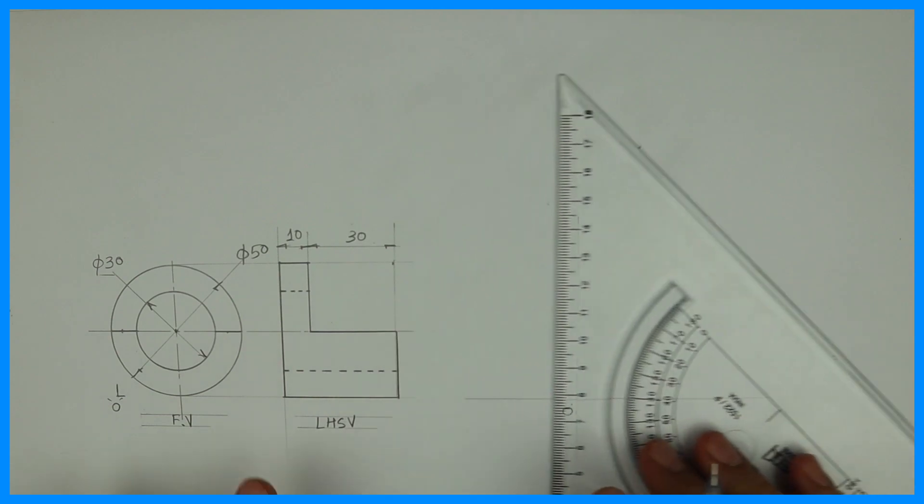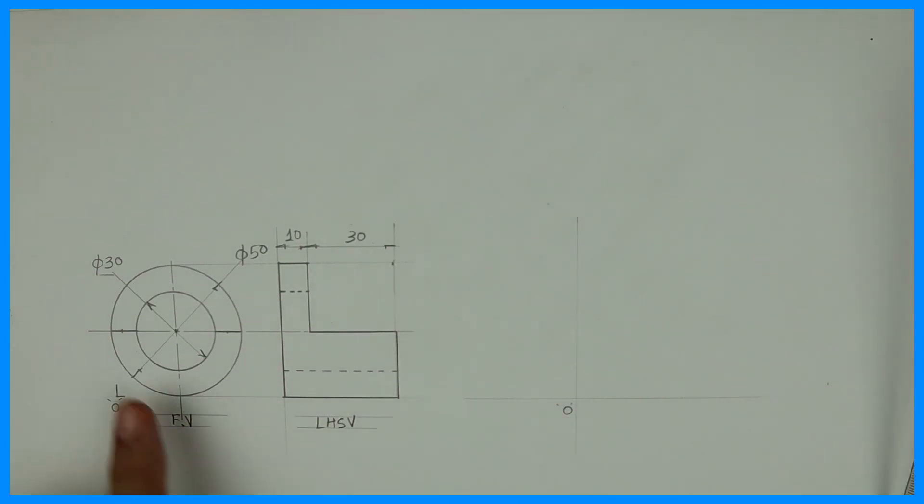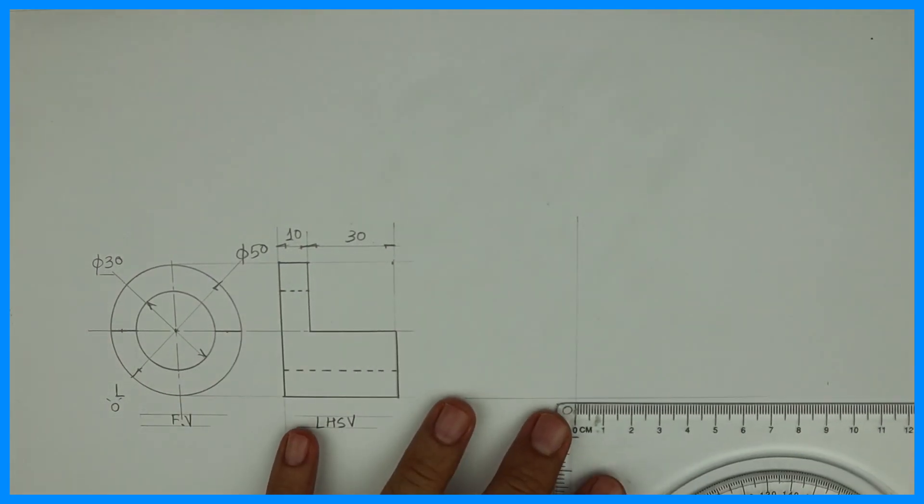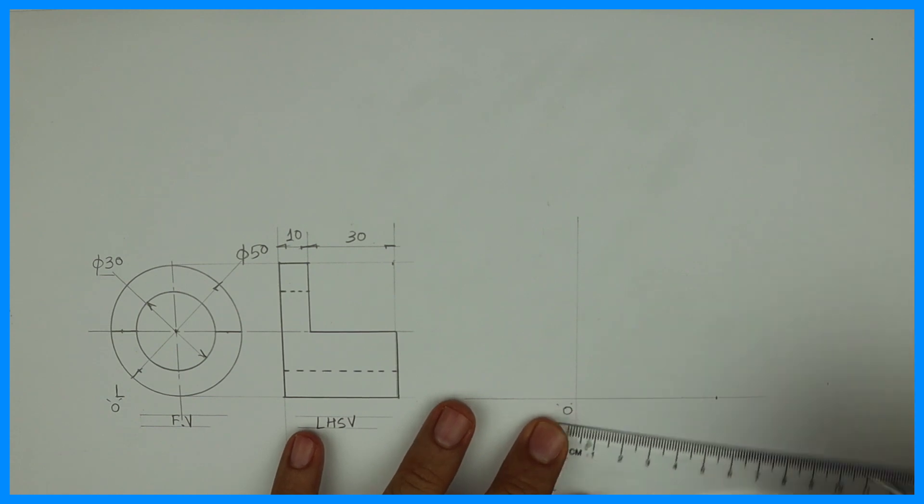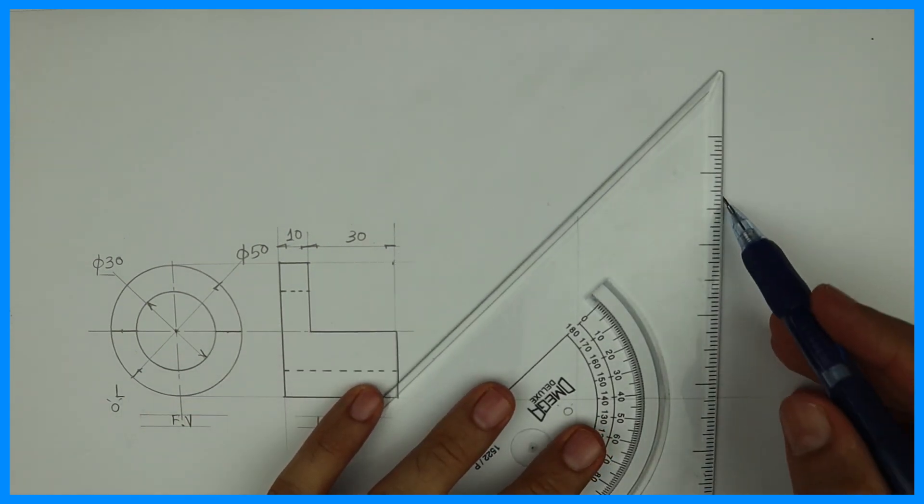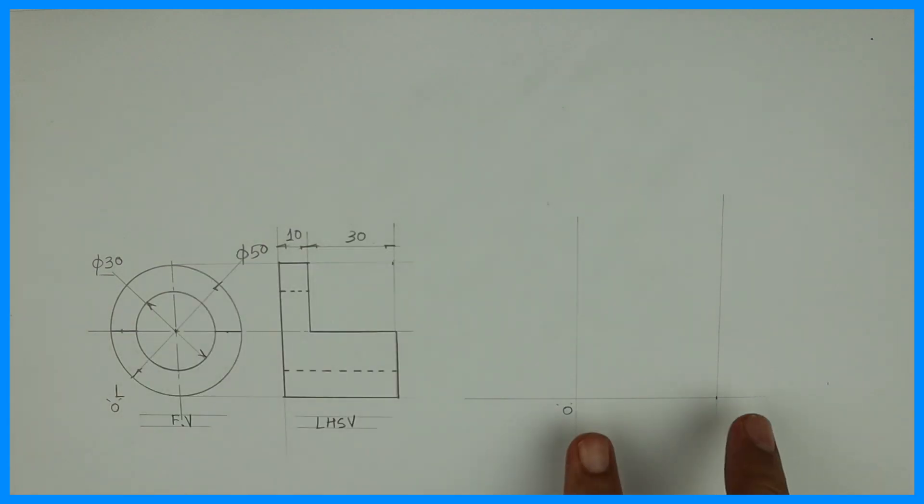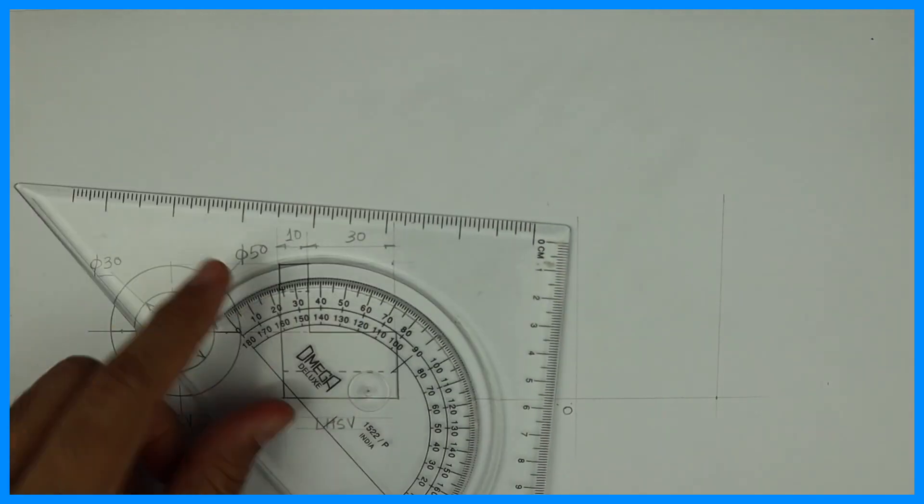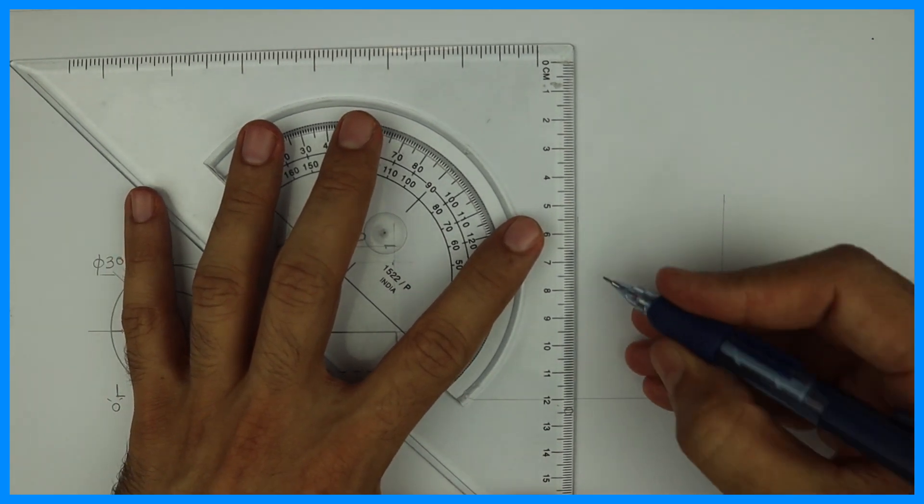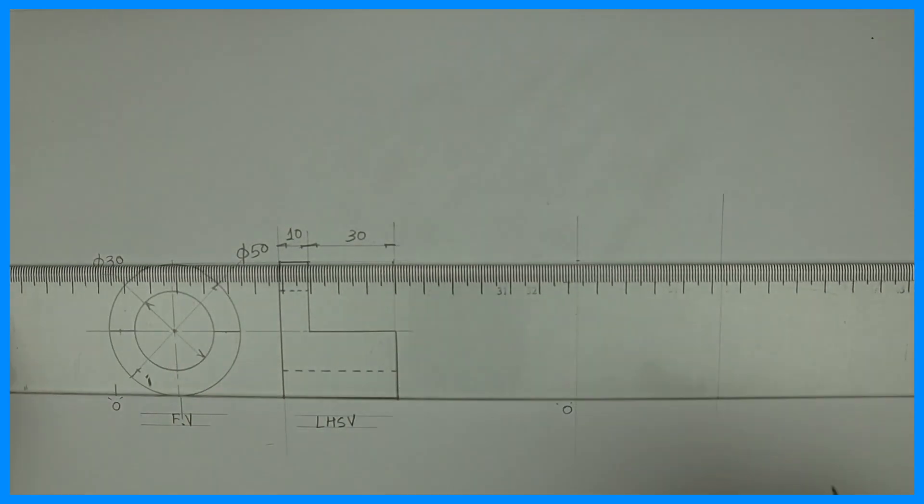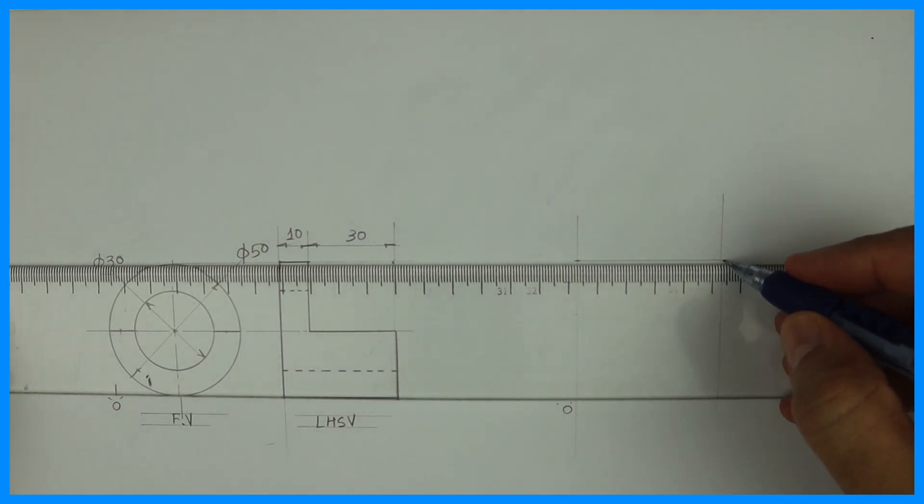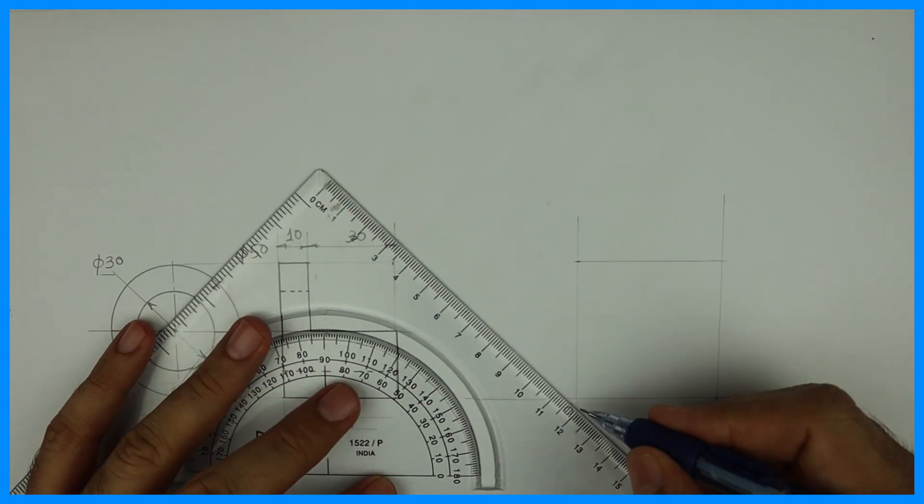See, origin is over here. Length is 50, diameter of the circle. So we'll mark 50. Height will be also 50. Height is also 50. Width is 40.